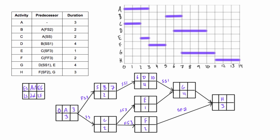C is a start-start relationship coming off of A, so it can start when A starts. We have zero, then zero plus two gives an earliest finish of two. For E, it's a start-to-finish relationship with a lag of three, so E's finish will be three days after C's start. Zero plus three gives us three in the early finish, and then to find the early start we subtract the duration, so E would start on day two.